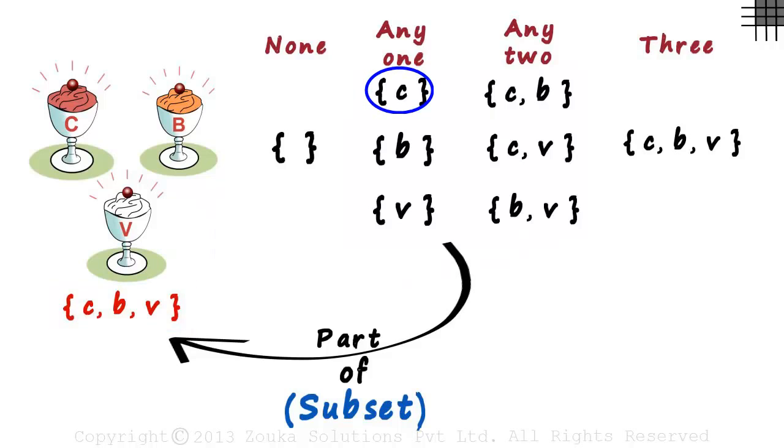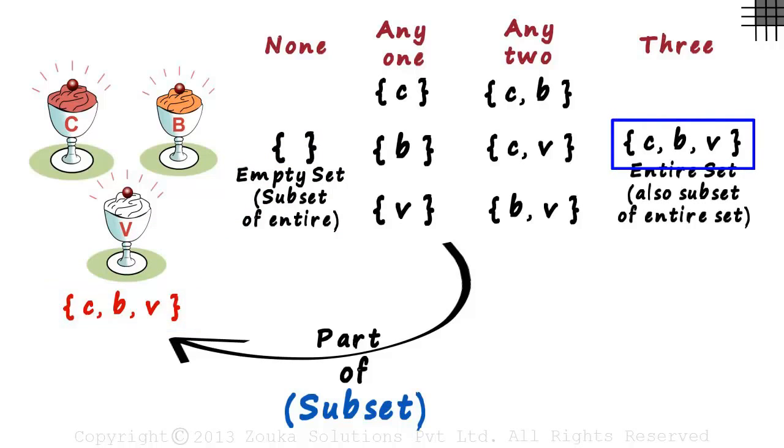C is a part of CBV, CV is a part of CBV, or BV is a part of CBV. But we should also know that the empty set is also the subset of the entire set. Nothing is a part of this entire thing. And this entire set is also a subset of this entire set.